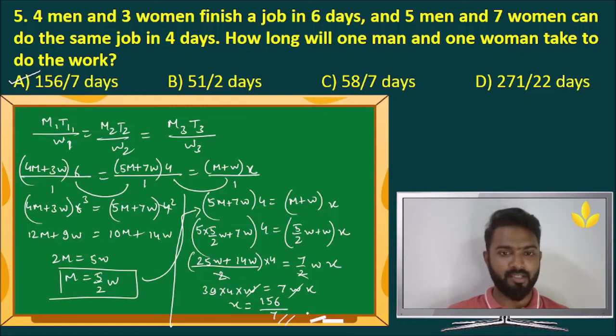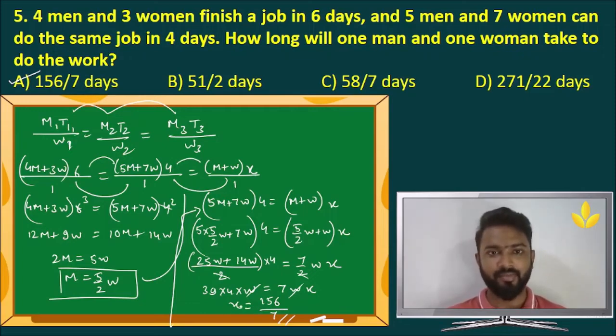So that is the answer. The question is a little time consuming, yes, but it's not that difficult if you know how to solve it. You get 3 terms equation and then you use the first two terms and equate them and then find the relationship between one man and one woman's efficiency and then apply the same thing with these two and then get the value of x. Everything else gets cancelled. Now, let's use this same concept and solve the next question.